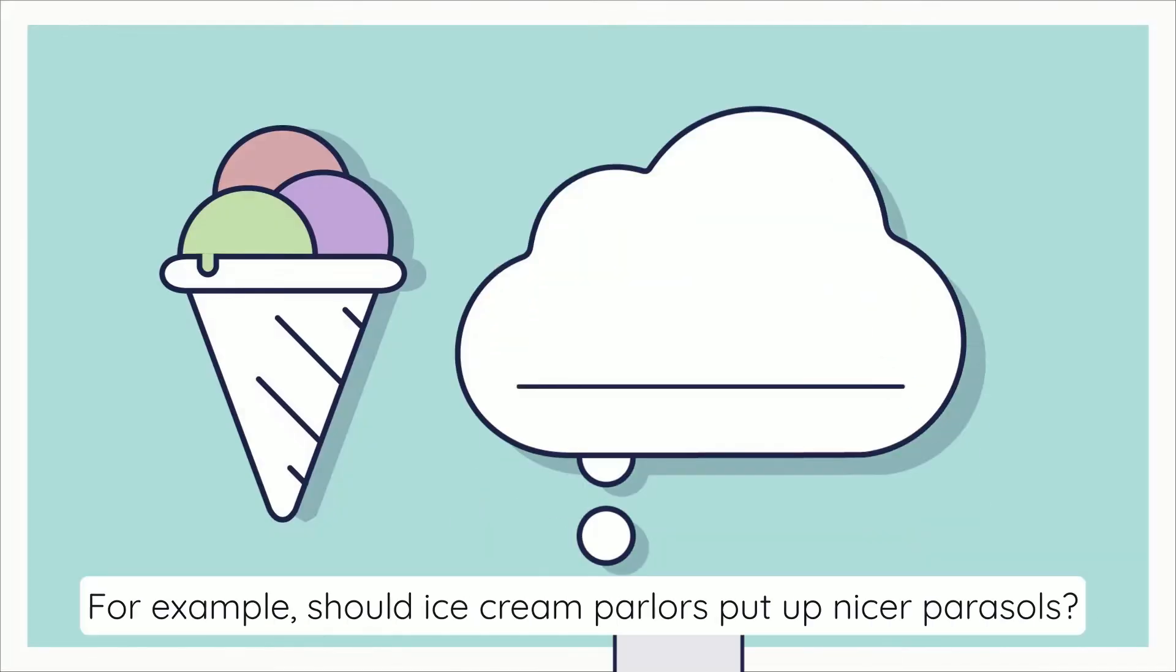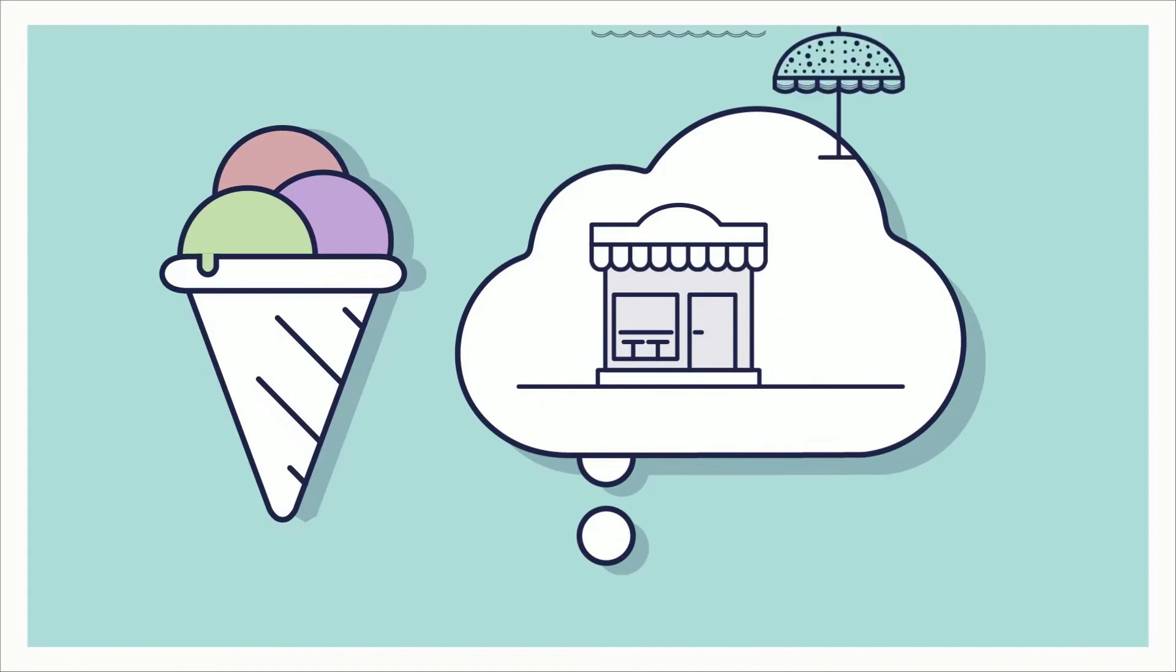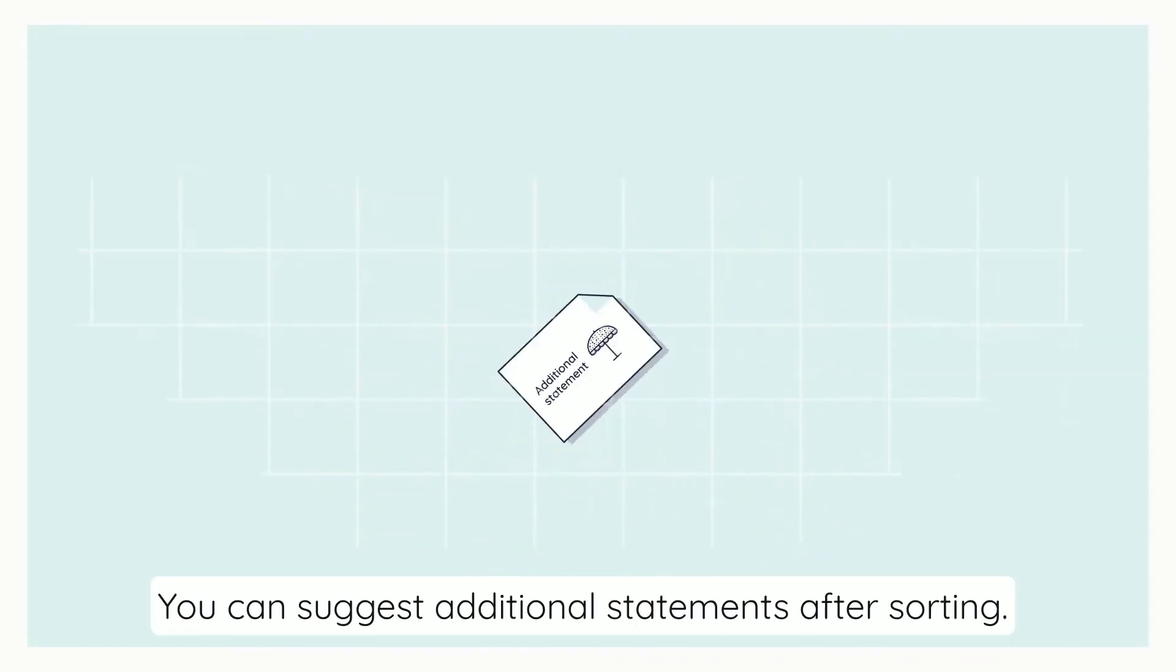Is there a feature missing that is important to you? For example, should ice cream parlors put up nicer parasols? You can suggest additional statements after sorting.